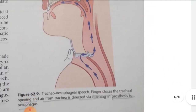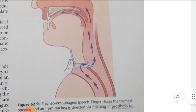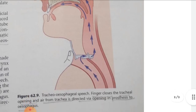Here, air passes from the trachea to the esophagus. The air column from the trachea reaches the esophagus and produces speech. Thank you.